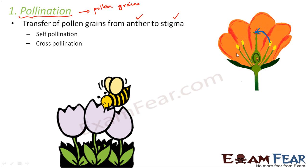Pollen grains — that is the male gametes — always want to reach the female gamete. When the two gametes meet each other, that is where the real fusion or reproduction happens. This is the first step: carrying the male gamete from the male reproductive part to the female reproductive part. Now there can be two types of pollination: self-pollination and cross-pollination. In self-pollination, pollen grains are transferred from the anther of the same flower to the stigma of the same flower.